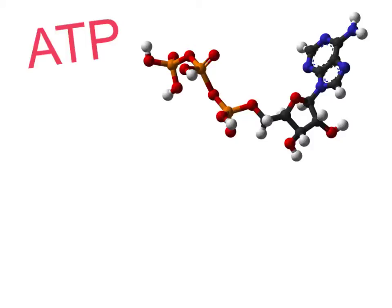Let's start with the letters and say what they actually mean. A stands for adenosine, T is tri, and P of ATP means phosphate. So ATP is adenosine triphosphate.